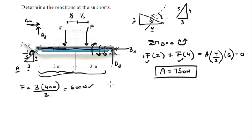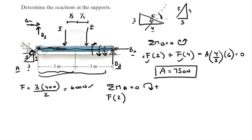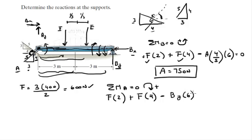Now we solve for BY and BX. The sum of the moments at A equals 0 — assume clockwise is positive. No moment is created by BX because it's aiming directly at A. The first F × 2 plus the second F × 4, minus BY × 6 (counterclockwise, negative) equals 0. Substituting F = 600 N and solving gives BY = 600 N.